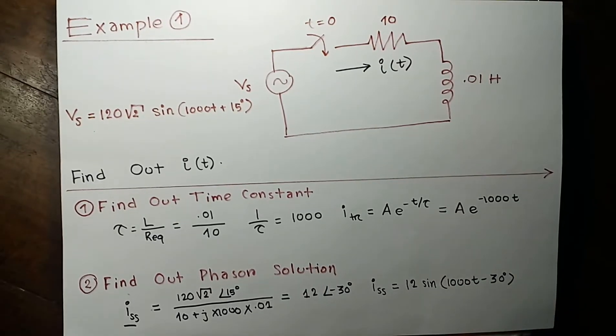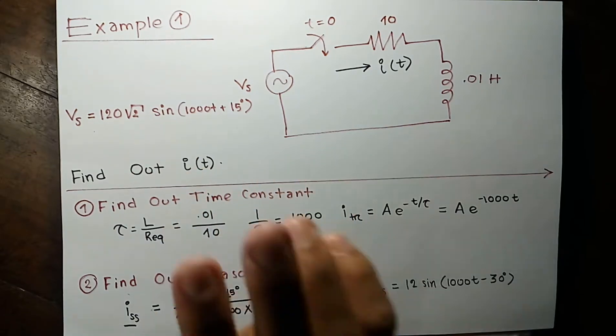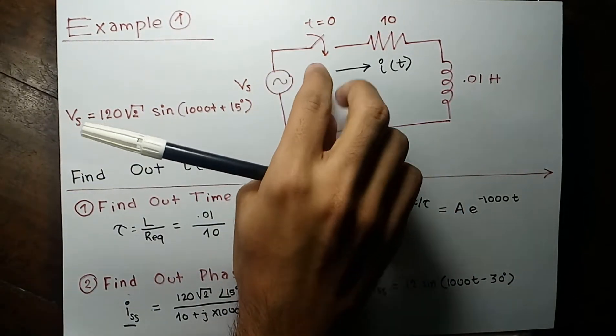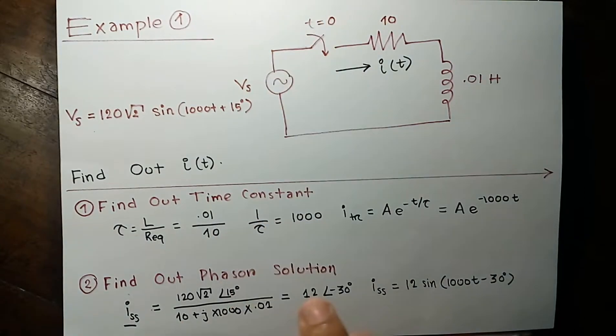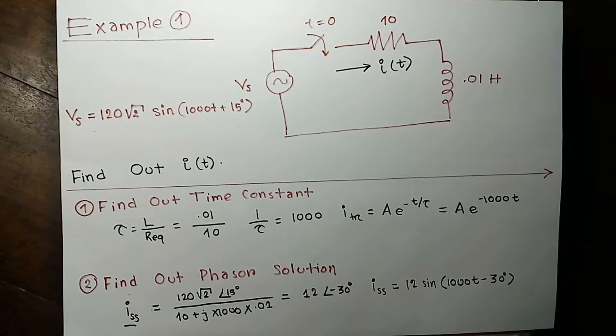So in this video I will try to solve the first example from slide. This is a simple RL circuit energized by this voltage source. And a switching operation occurs. This switch closes at the time t equals to 0. And we are asked to find out current as a function of time.